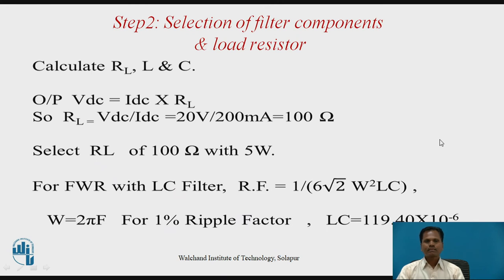Step 2 is the selection of filter components and load resistor. We decide the values for load resistance RL, inductance L, and capacitor C. Output VDC is given by IDC × RL, so load resistance RL = VDC / IDC. With a required DC output voltage of 20V and DC current of 200mA, the required value of load resistance is 100 ohm. Select load resistance RL of 100 ohm with 5 Watt power rating.